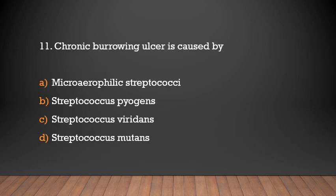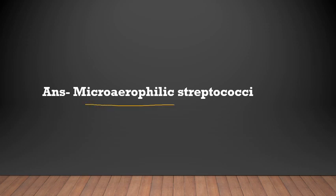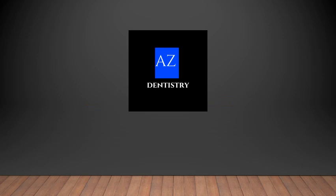Rodent ulcer is caused by: microaerophilic streptococcal, Streptococcus pyogenes, Streptococcus viridans, or Streptococcus mutans? The answer is microaerophilic streptococcal. That's all about the topic of ulcers. See you with a new video, thank you.